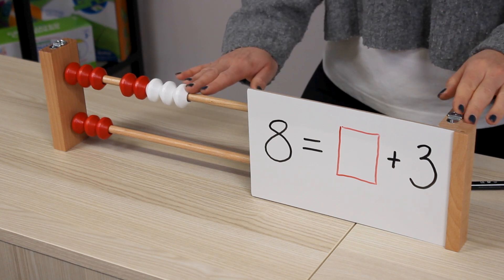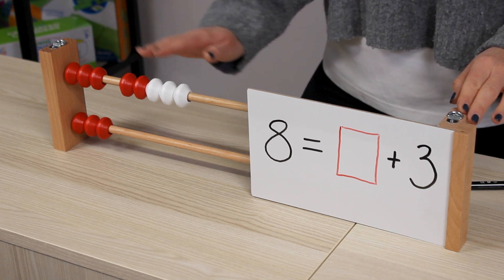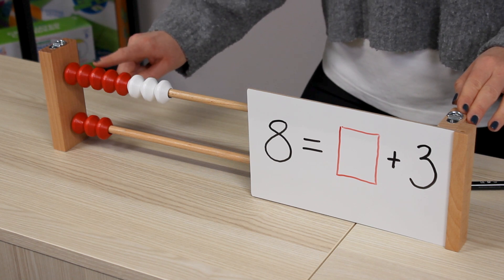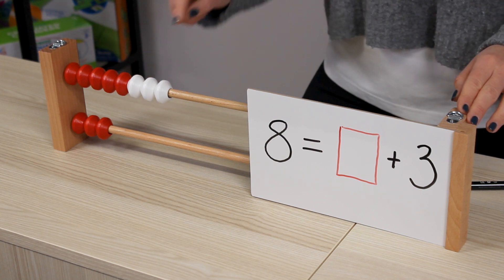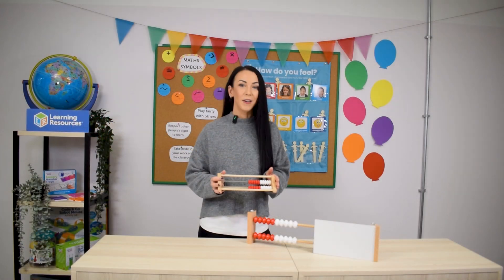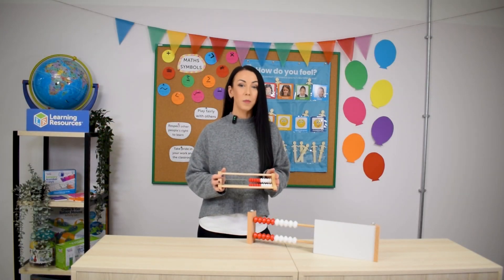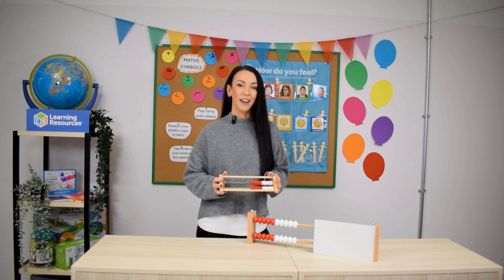Now if we push those back together we can check that our three add five equals eight one two three four five six seven eight and there we have it three ways to use the Rekenrek within your classroom. I hope you found these useful and thanks for watching.